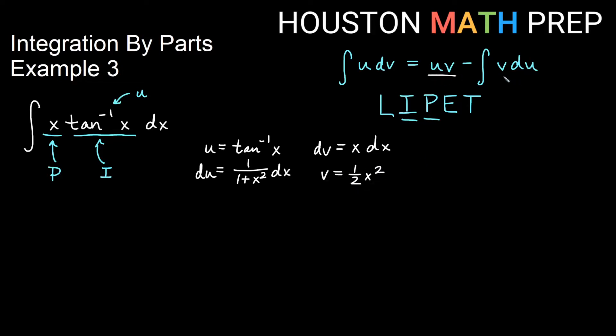So we go ahead and use our uv minus integral v du formula to do this integral by parts. So u times v, I have a 1 half, I also have an x squared, and I have an inverse tangent of x. So that's the first part, u times v. Minus the integral of v du, so I have a 1 half that I might put out front of the integral. And then I have x squared times 1 over 1 plus x squared dx. So I have an x squared on top, and I have a 1 plus x squared on the bottom.